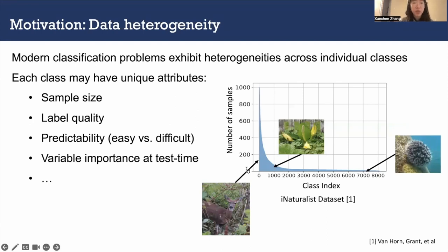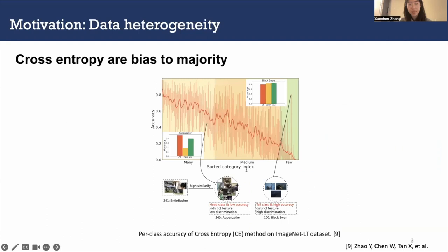Modern classification problems exhibit heterogeneity across individual classes. Each class may have unique attributes like the sample size, label quality, predictability, which means that this class is easy or difficult to be classified, and also the variable importance at test time.